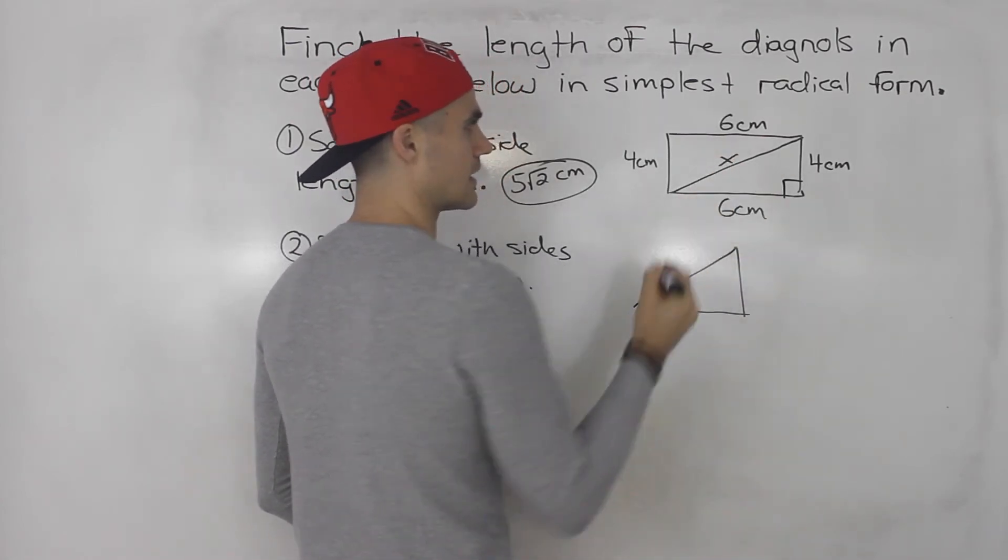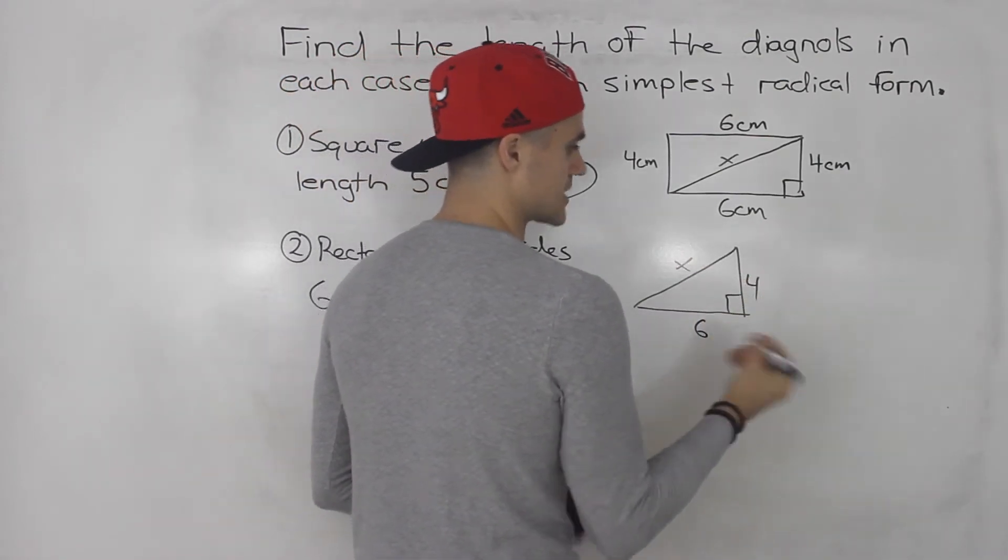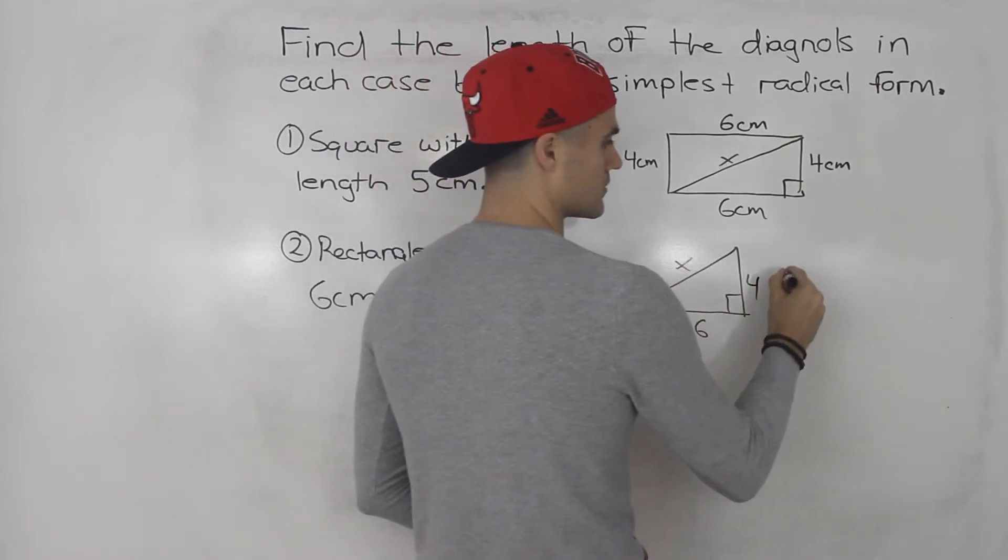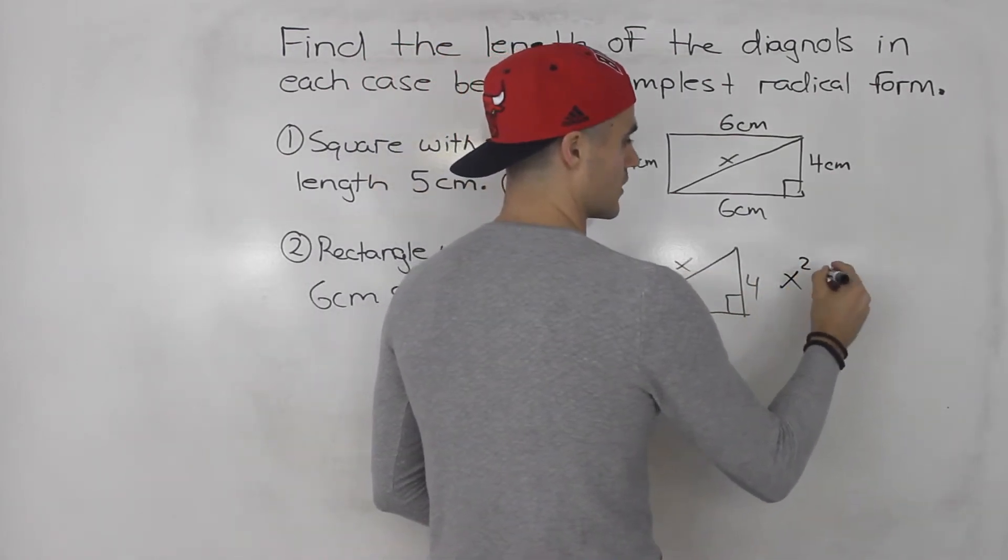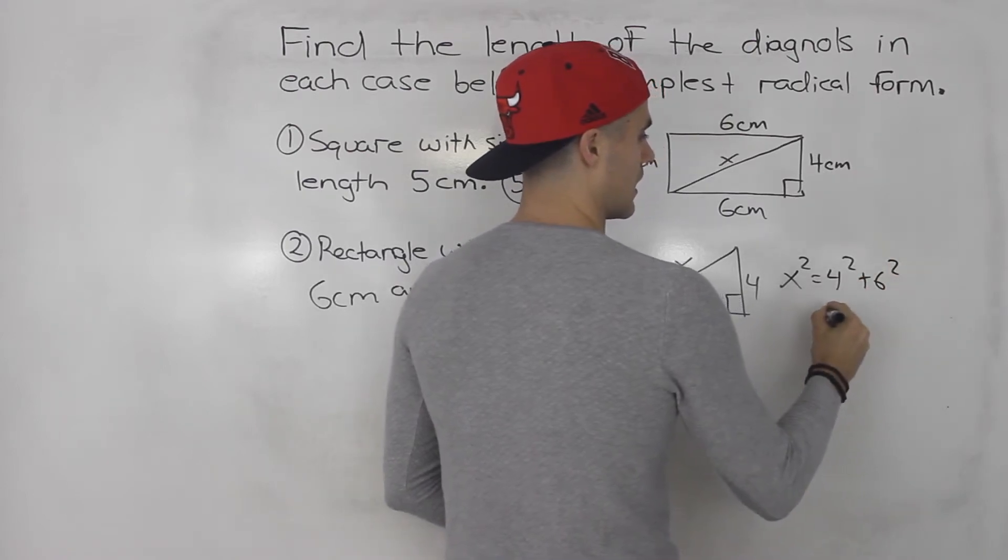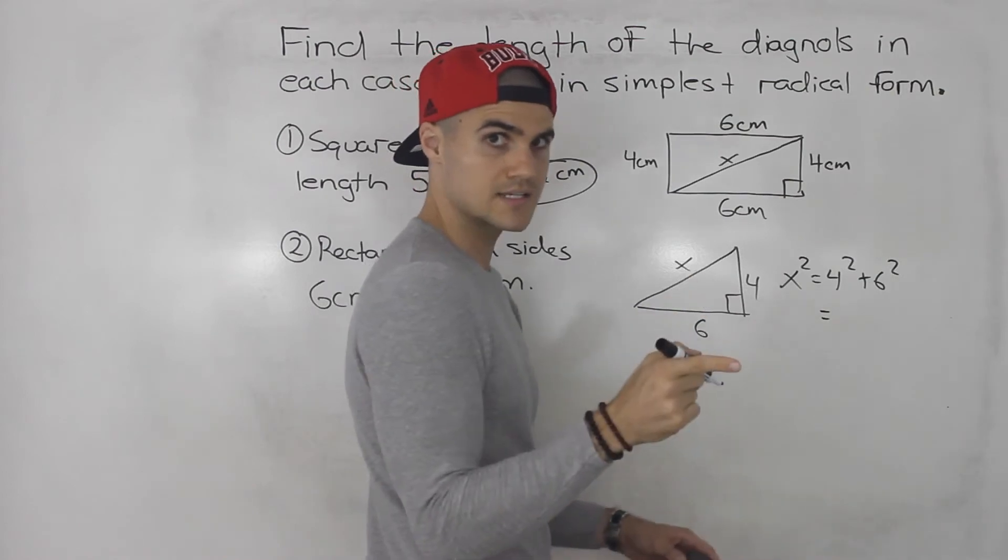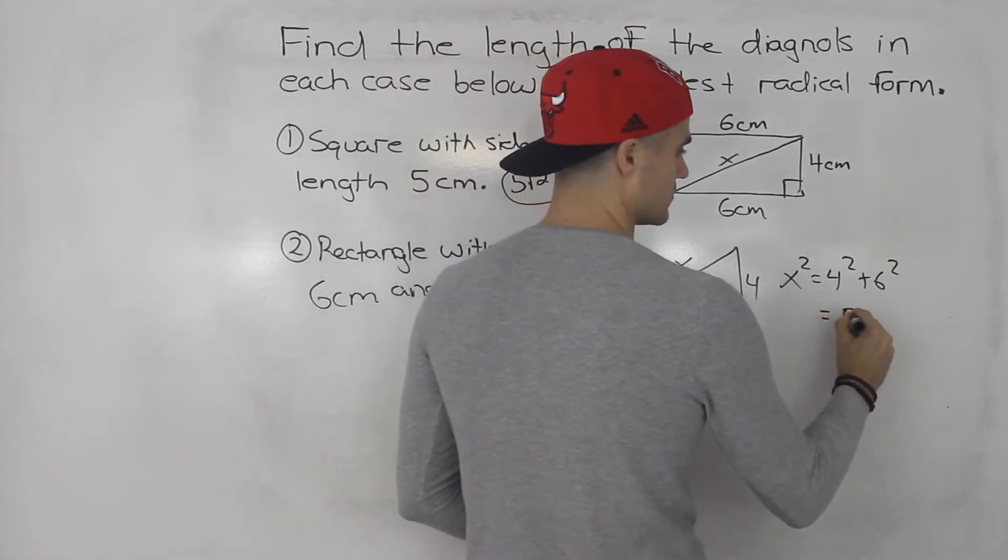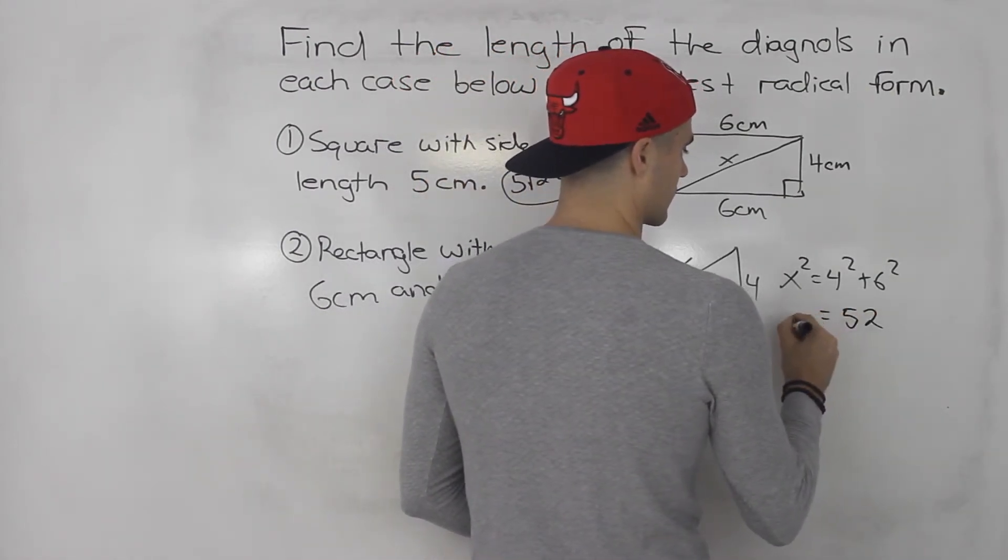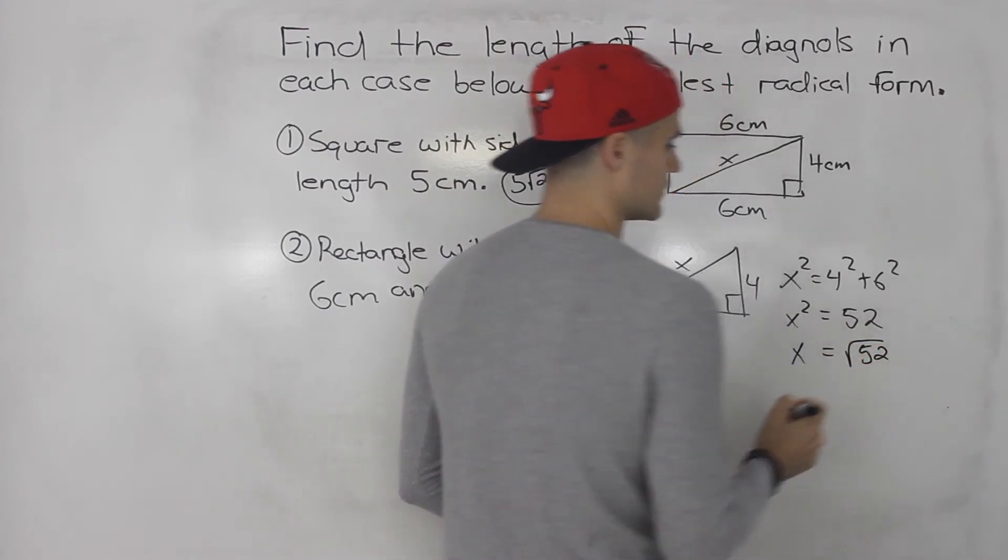Let's say this length of the diagonal is x. This is 6, this is 4. Same process. Basically, the hypotenuse squared is equal to 4 squared plus 6 squared. This would be 36, this would be 16. 36 plus 16 gives us 52. So that means x is root 52.